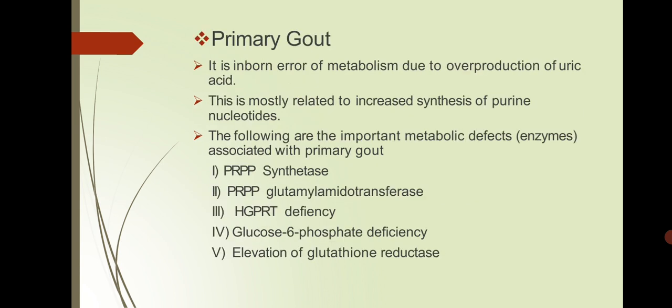In primary gout, it is an inborn error of metabolism due to overproduction of uric acid, mostly related to increased synthesis of purine nucleotides. Some metabolic enzyme defects in primary gout include PRPP synthetase, PRPP glutamylamidotransferase, HGPRT deficiency, glucose-6-phosphatase deficiency, and elevation of glutathione reductase. PRPP synthetase is normally under feedback control by purine nucleotides, but variant forms not subject to feedback regulation lead to increased purine production.